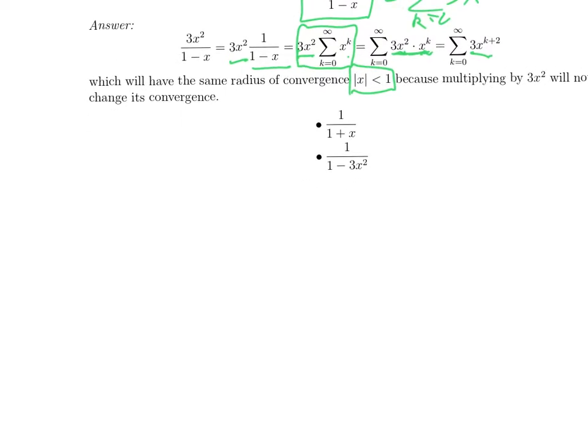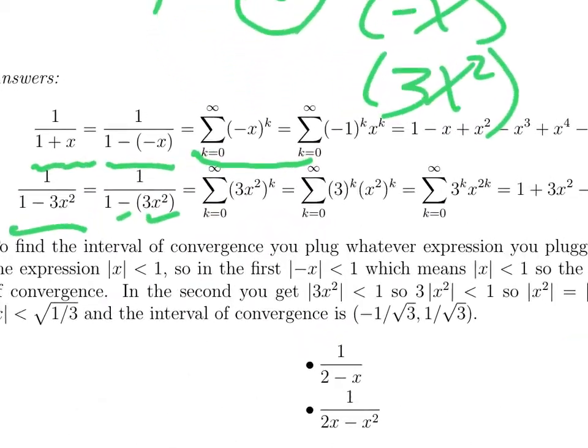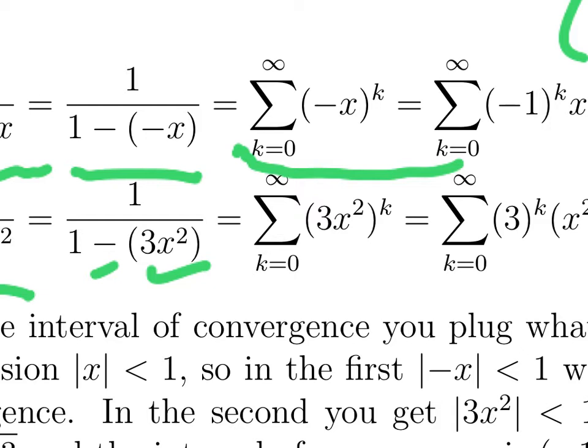Here's the second trick. If you have an expression like 1 over 1 plus x, or 1 minus 3x squared, you can make that look like 1 over 1 minus something. So in the first case, 1 over 1 plus x is 1 over 1 minus negative x. In each case, you're replacing in the formula 1 over 1 minus x, you're replacing x with some more complicated expression. Minus x, 3x squared, could be anything. So as long as the thing in parentheses is absolute value less than 1, this equality still holds. You can still replace the 1 over 1 minus anything with the sum of anything to the k.